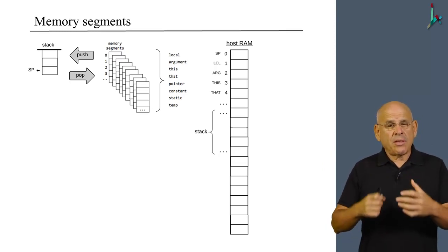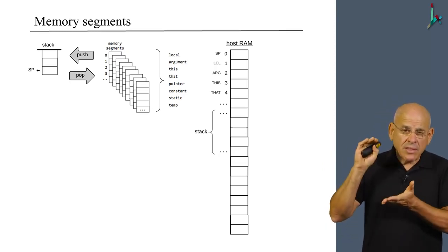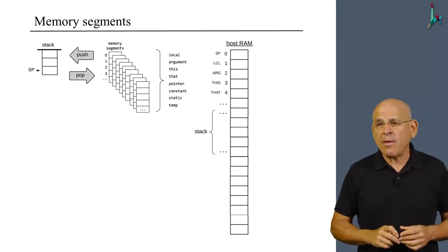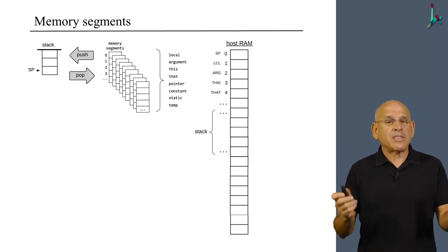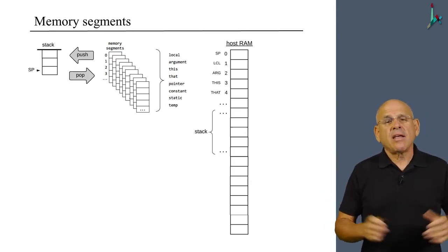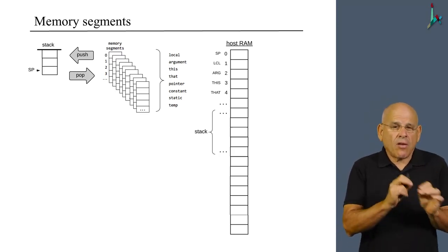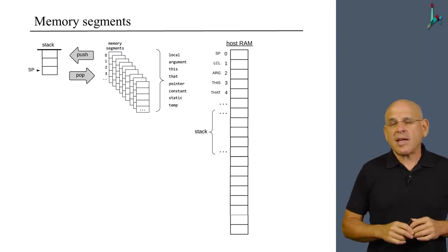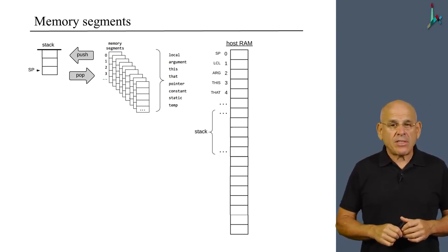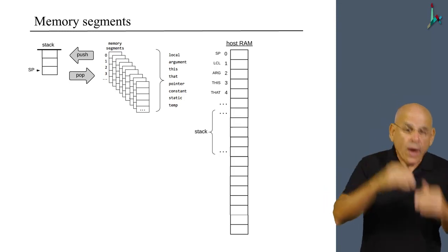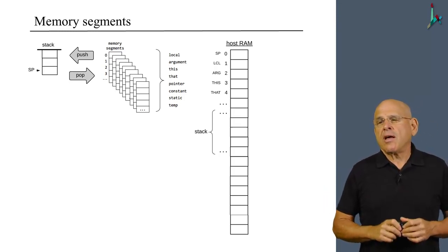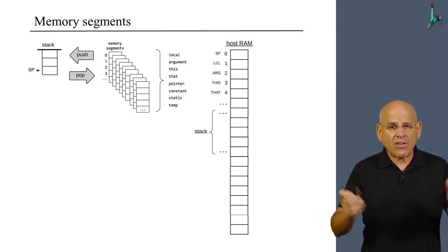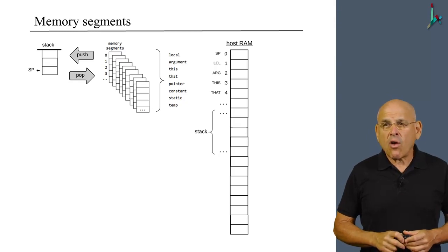In addition, the VM implementation also allocates a certain area on the RAM to hold the global stack. That is the stack that keeps the working stack of the currently running VM function, as well as all the working stacks and memory segments of the functions that wait for the current function to terminate, namely the functions which are on the calling chain.